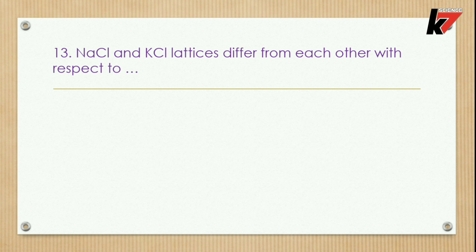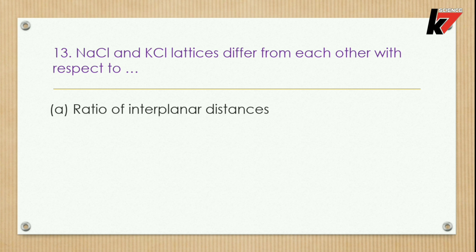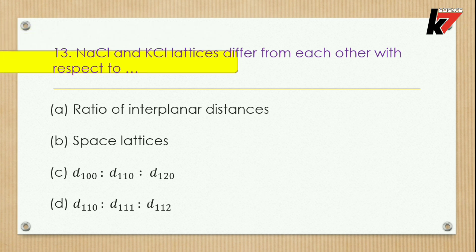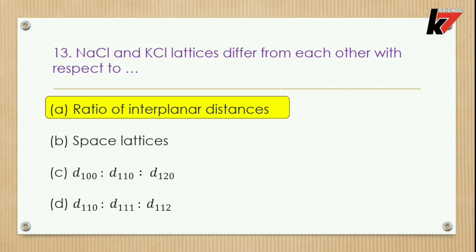Question 13: NaCl and KCl differ from each other with respect to — options: ratio of interplanar distances, space lattices, ratio d₁₀₀:d₁₁₀:d₁₂₀, or d₁₁₀:d₁₁₁:d₁₁₂. The correct option is number one: ratio of interplanar distances.